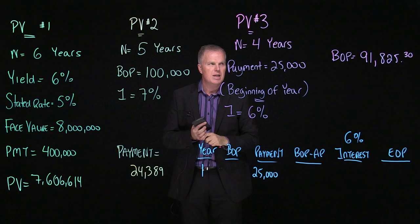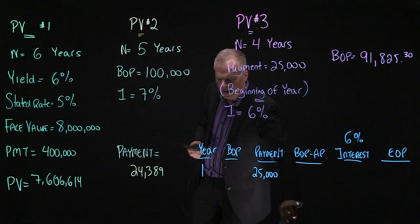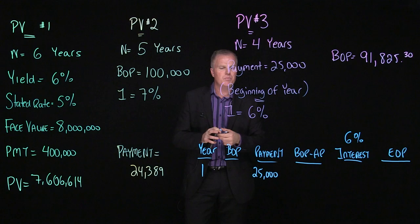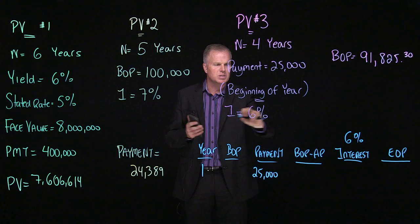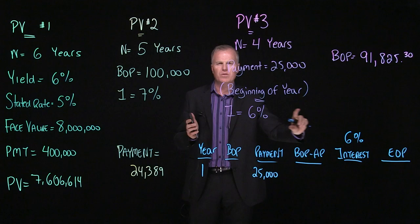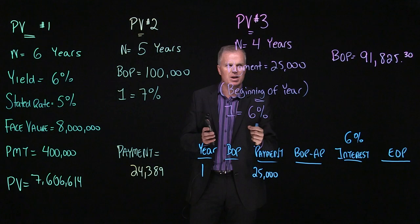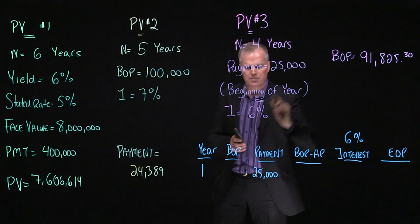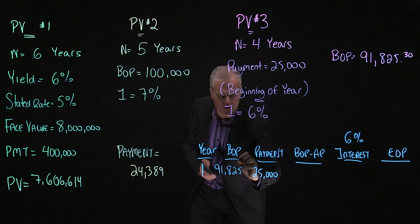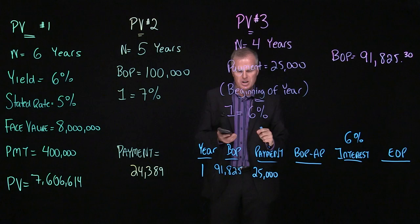Now we've worked through three different types of present value calculations. The last thing I want to do is I want to show you how to create an effective interest schedule. This is one of the more challenging effective interest schedules with this last calculation, because the payment occurs at the beginning. So over the last decade plus, I've come up with this effective interest schedule method that I really like because it puts all the information on one row. And I really find that students like this method a lot, and it helps them understand it. So here's our number here, 91,825. And I'm just going to take away the zeros for now, just to make this a little simpler.